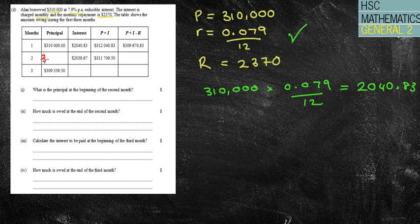So we've got here 309,670.83. Now I've got that from the original one, the one beforehand. So what is the principal at the beginning of the second month? Well, it's the $309,670.83. That's the first question answered.